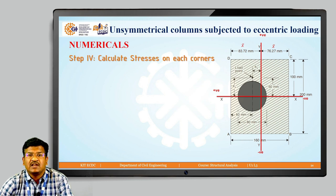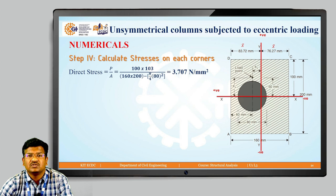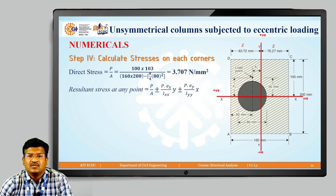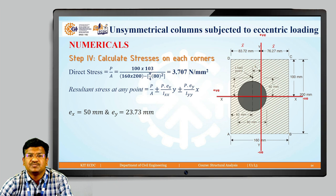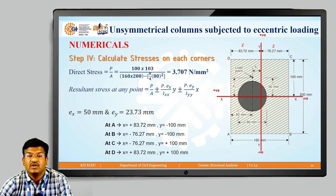Step four: calculate stresses on each corner. Direct stress = P/A = 100×10³ / (160×200 − π/4×80²) = 3.707 N/mm². We also need Ex = 50 mm and Ey = 23.73 mm, along with x and y ordinates at all four corners to calculate the resultant stress using the formula: sigma = sigma_direct ± sigma_Bx ± sigma_By.